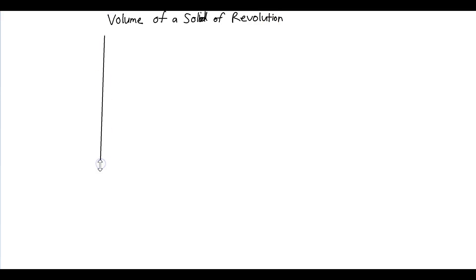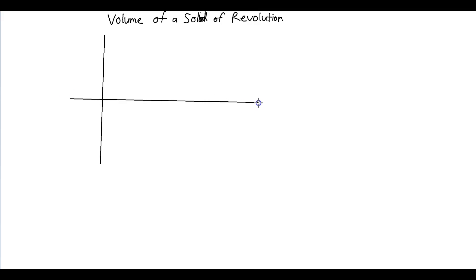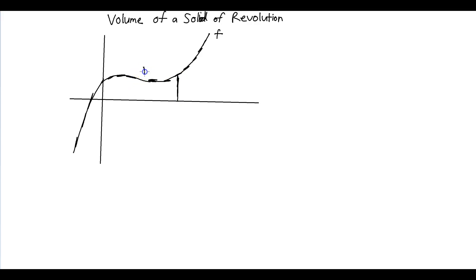So let's say we had a graph — this is a graph of f. Let's say we had this region, let's call it region R, taken from 0 to A. And we want to find the volume when revolved around the x-axis.